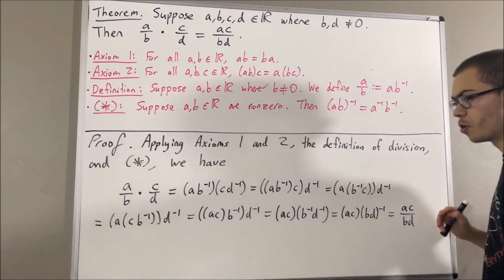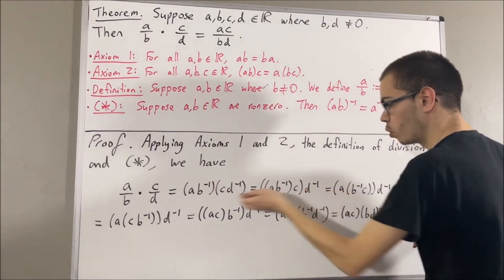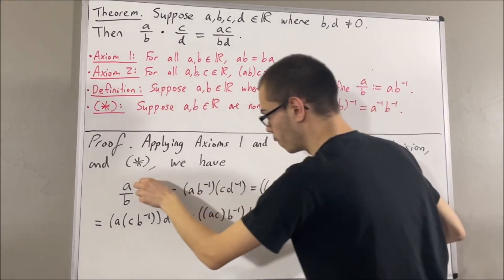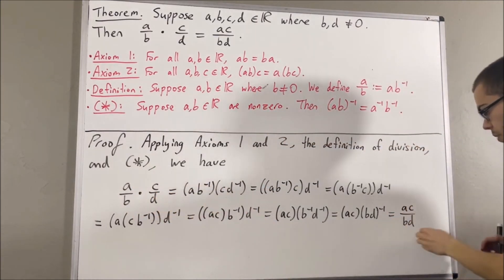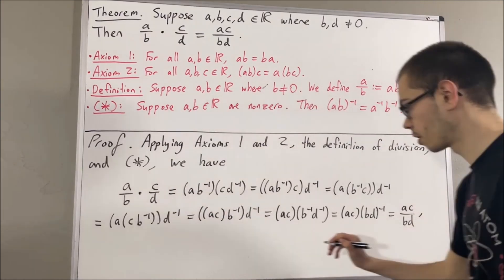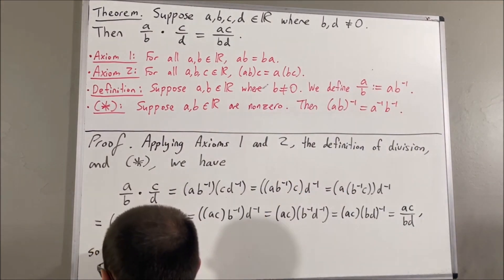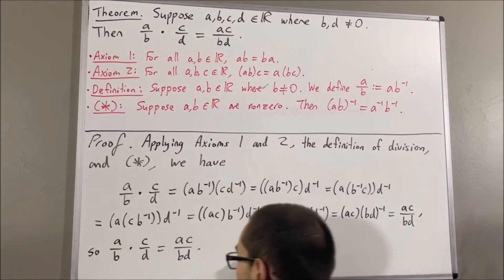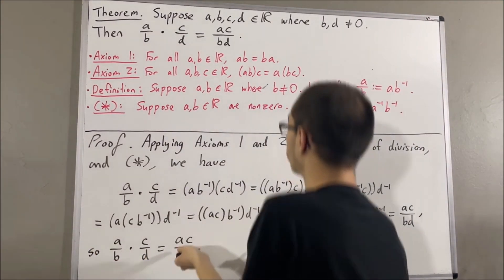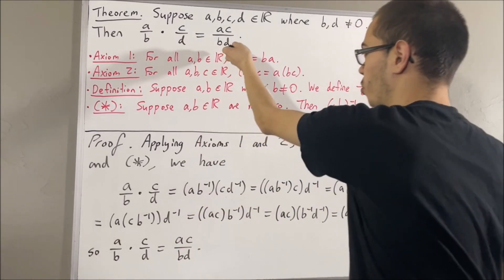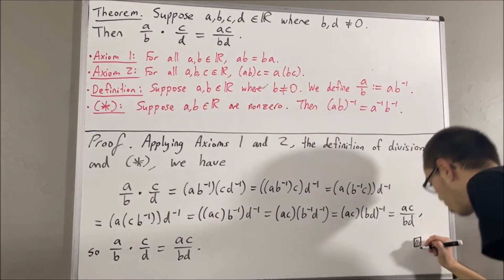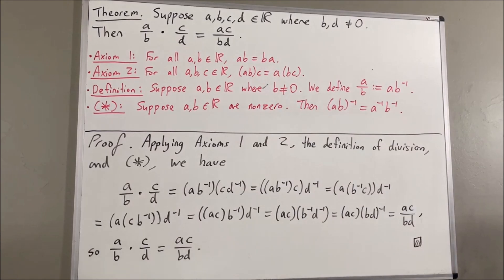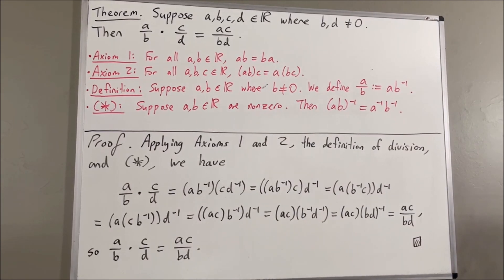And so, through this chain of equalities, we have established that A over B times C over D is equal to AC over BD. That is exactly what we wanted to prove, so this completes the proof. And that's pretty much it for this video.